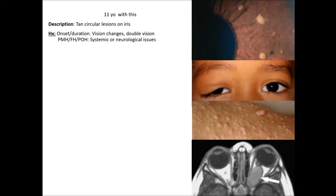You want to check for strabismus with EOMs, confrontational visual fields, and then a slit lamp exam. On slit lamp you're looking for Lisch nodules. You can also see enlarged corneal nerves — that's an OKAP question. Then look at the nerve because you could find glaucomatous cupping or optic atrophy.